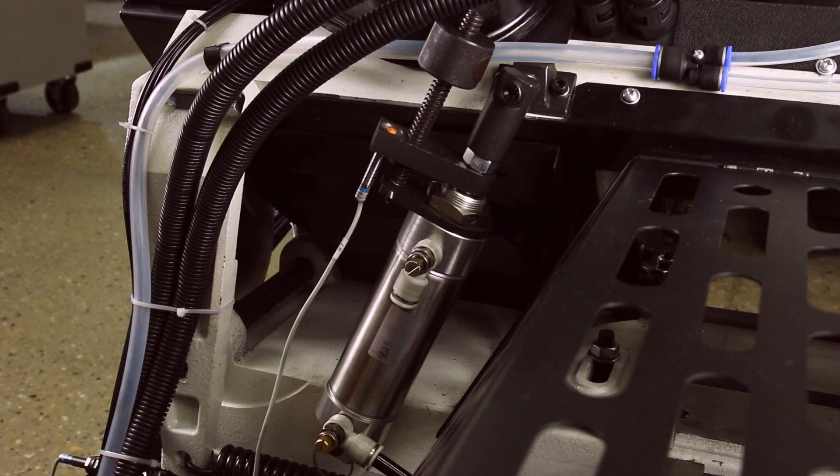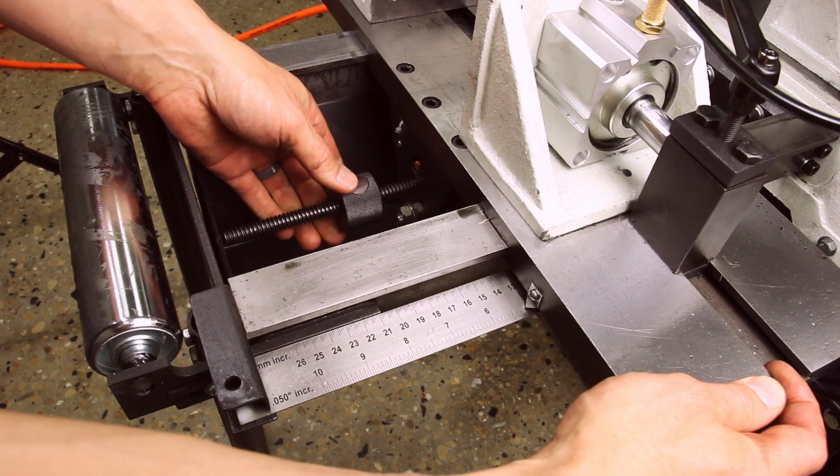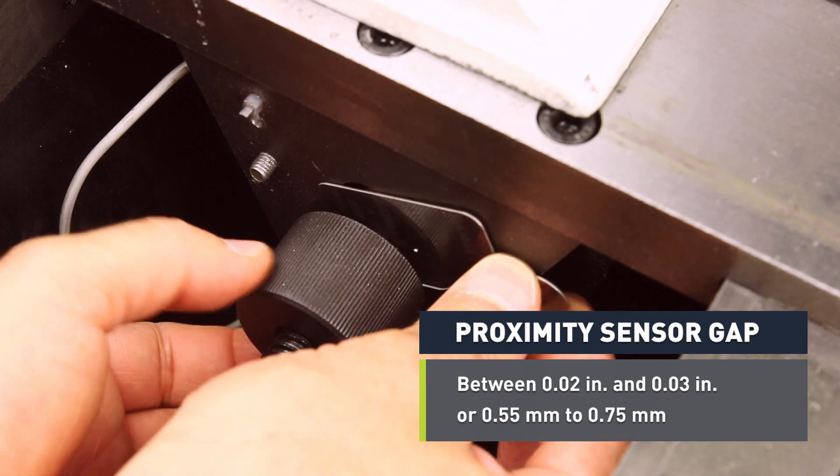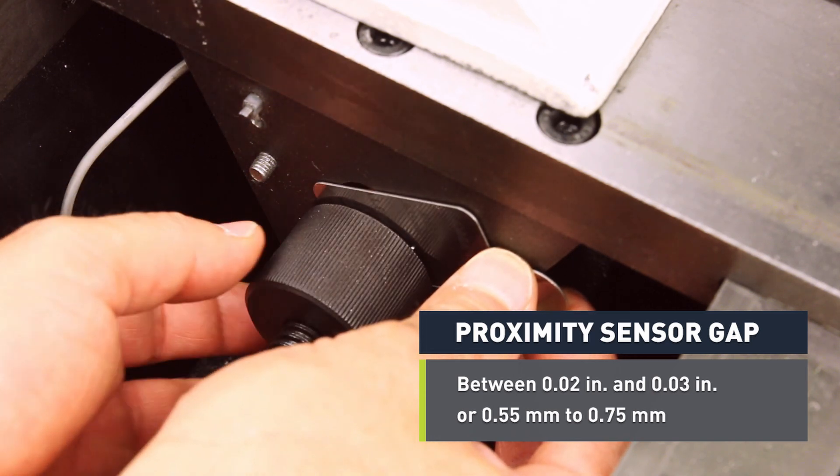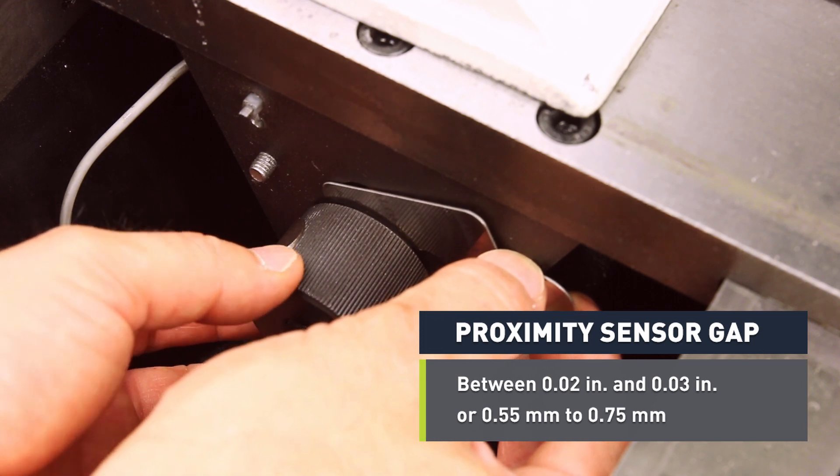You must verify that the proximity sensors are correctly installed and that their wiring is free of knots or obstructions. Use a metal shim to verify that each proximity sensor has a gap of between 20 and 30 thousandths of an inch or 0.55 to 0.75 millimeters.